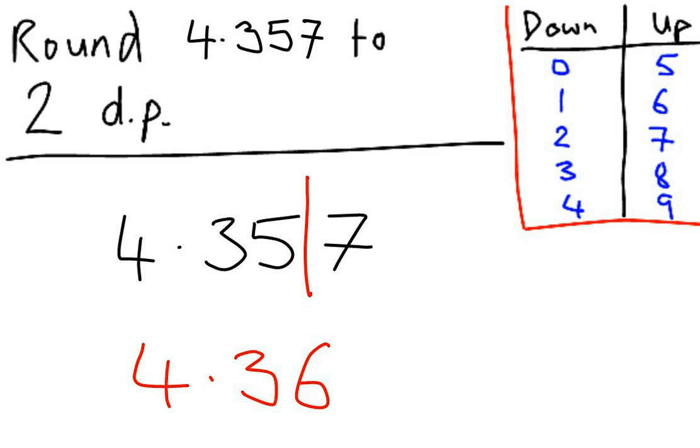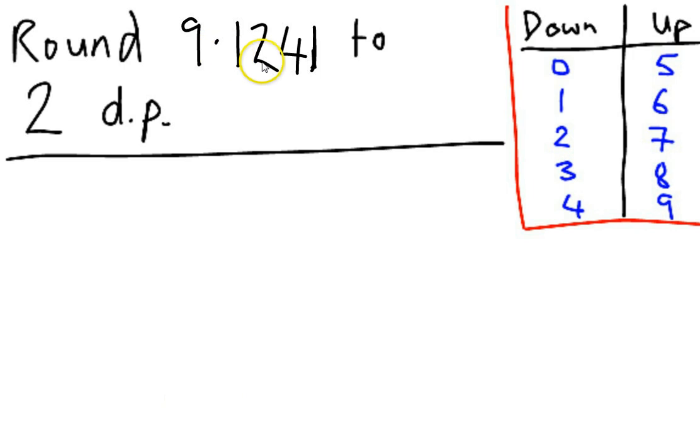Let's do another example. Our next example is 9.1241. You'll notice this has 4 digits after the decimal place, so we've got this to 4 decimal places already. That doesn't make a difference. The first thing I'm going to do, as I did before, is write out 9.1241.